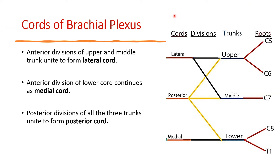After divisions, we have the cords of the brachial plexus. All 3 trunks divide into anterior and posterior divisions. The lateral cord is formed by joining of the anterior divisions of the upper and middle trunks. The medial cord is a continuation of the anterior division of the lower trunk. The posterior cord is formed by joining of the posterior divisions of all 3 trunks.